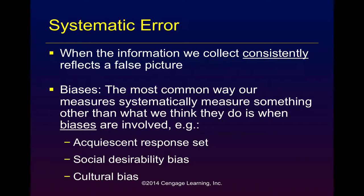Two similar phenomena are the acquiescence response set and the social desirability bias. I like to think of the acquiescence response set as the codependent response set. This is the tendency that people have to appear acceptable to other people by being agreeable with them. This is especially problematic when conducting face-to-face interviews. Respondents try to guess what the appropriate answer is based on what they think the interviewer would like to hear. For example, if you are conducting interviews on the subject of racism, one would predict there would be different responses based solely on the perceived race of the interviewer. The same could potentially be true for issues around gender, politics, sexual orientation, etc.